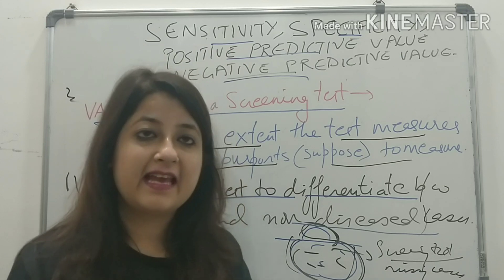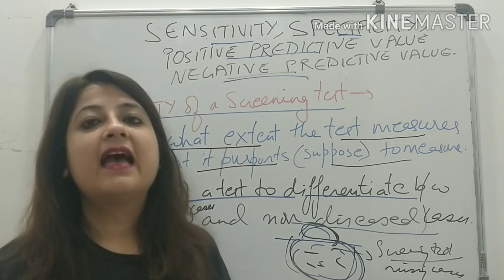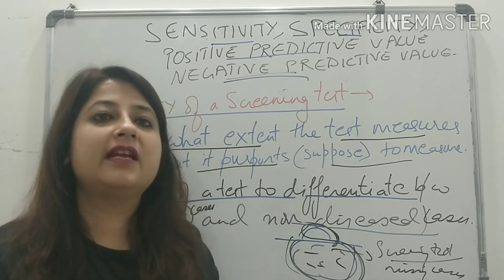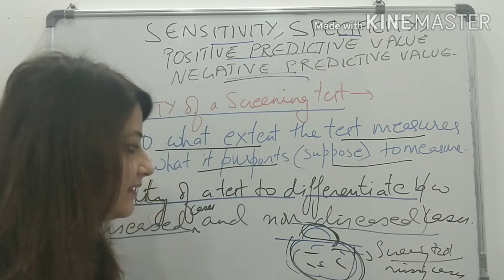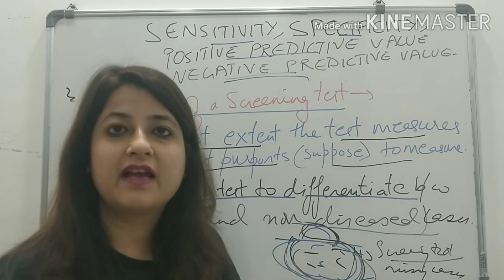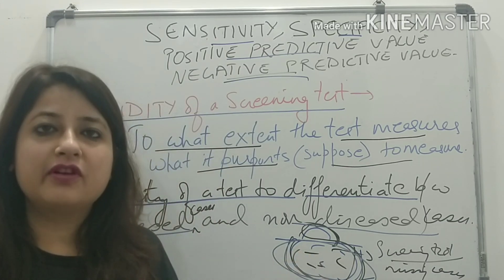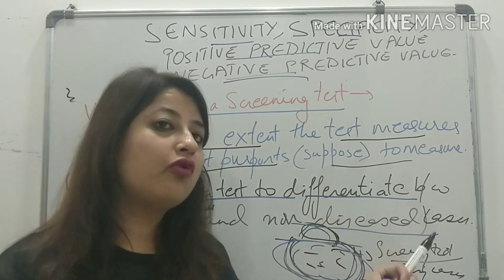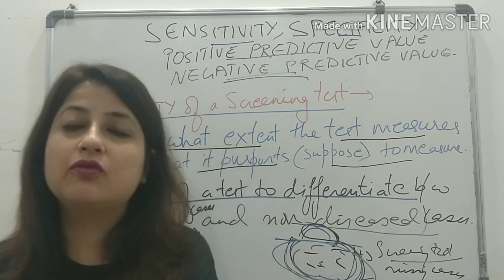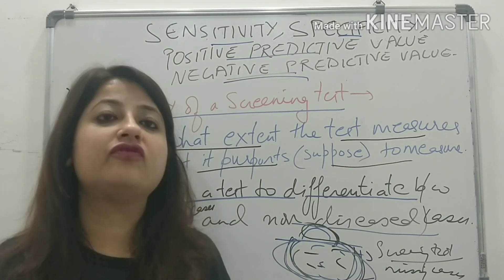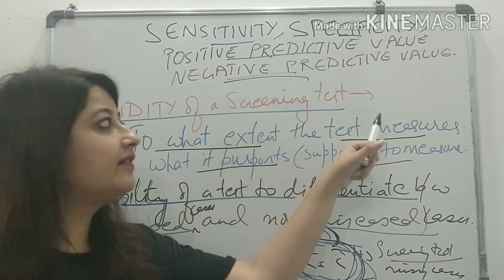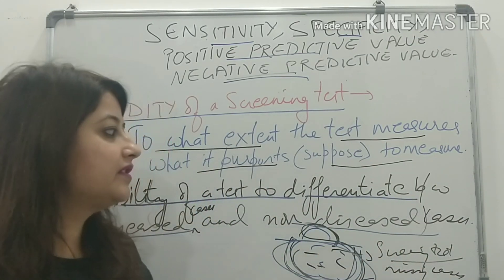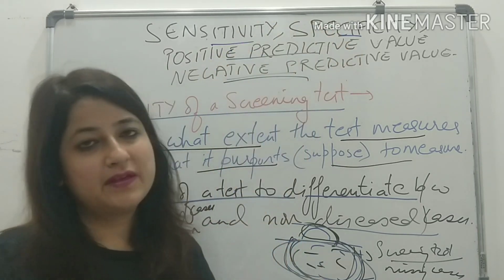It is the ability of a test — look at this line very carefully — the ability of a test to differentiate diseased cases and non-diseased cases. A screening test is valid when it is able to differentiate between those who are diseased from those who are not diseased, and should not give a false result. That is what is given by the validity of a screening test, which is determined by sensitivity and specificity.